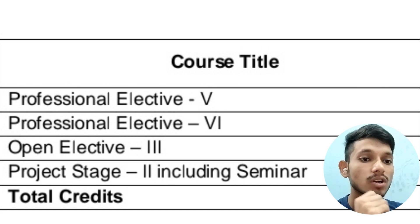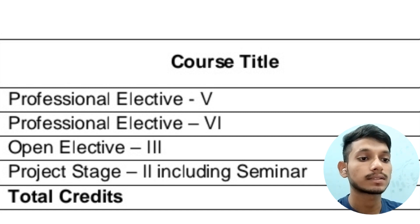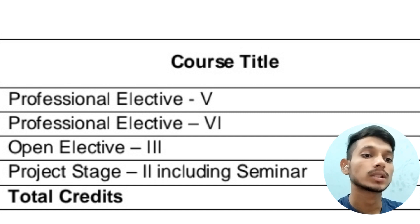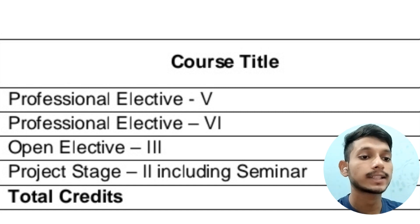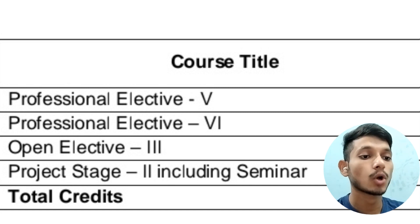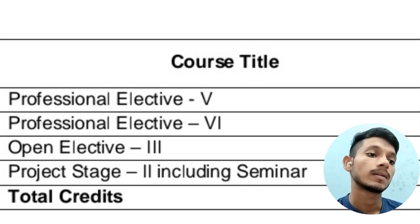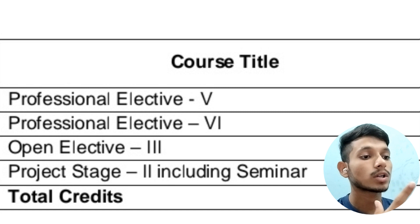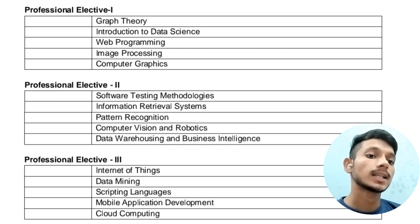In the final semester of fourth year, you will have four subjects including a project. The subjects are: Professional Elective 5, Professional Elective 6, Open Elective 3, and a Stage 2 Project including a seminar. There are 20 credits total for this semester. Now let's look at the subjects available in the electives. In Professional Elective 1, you will have: Graph Theory, Introduction to Data Science, Web Programming, Image Processing, and Computer Graphics.